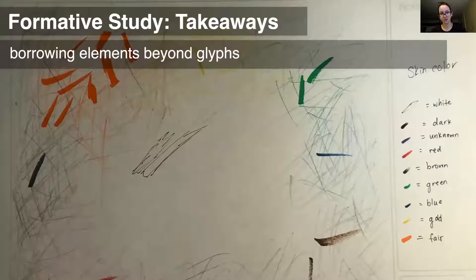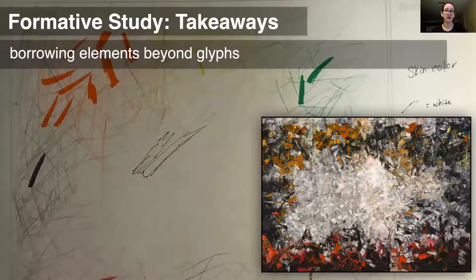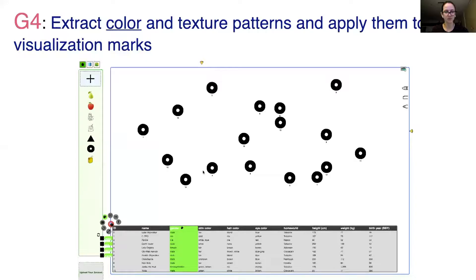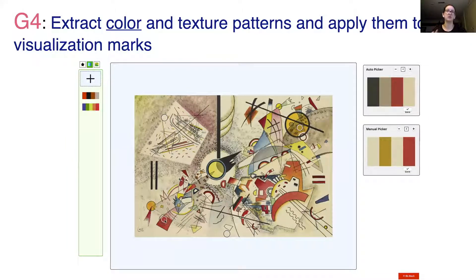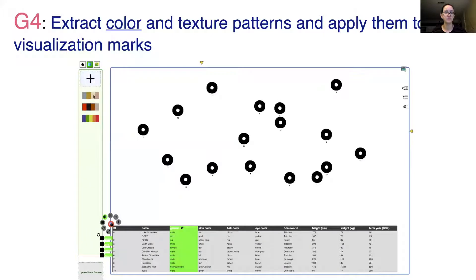Another extraction pattern we found from the workshops was the use of color, textures, and style as visual features of the data, as well as non-data decorations. To address this, DataQuilt allows for the extraction of color palettes from images. Say we want to apply a Kandinsky-inspired palette to some boring black rings — we can use an automatically extracted palette, or make our own by manually setting the number of colors and dragging color pixels around the image. When satisfied with the result, we can save the palette and apply it to our data.